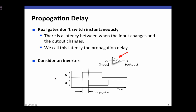If we have an example circuit like this inverter, its input A may change at one time, what we'll call T0, and its output B would change at a later time, what we'll call T1. The difference between these two is the propagation delay, or T propagation, representing some finite amount of time between when the input changes and the output changes.